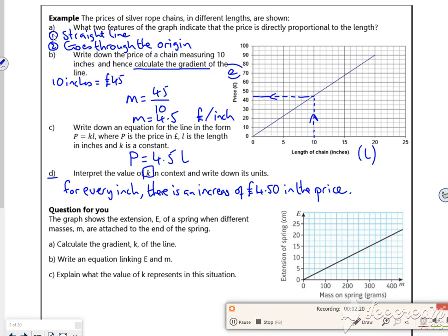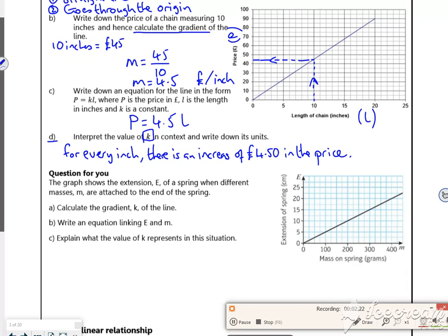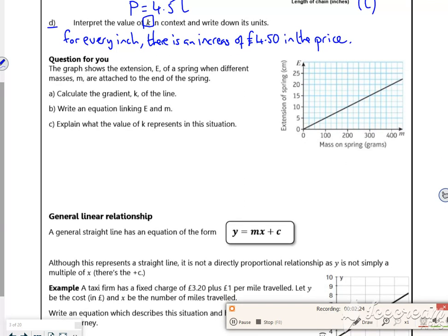Right then, so let's go to a question for you. So calculate the gradient. So I guess I've got 210 now, haven't I? So m is 10 over 200, 1 over 20, 0.05.